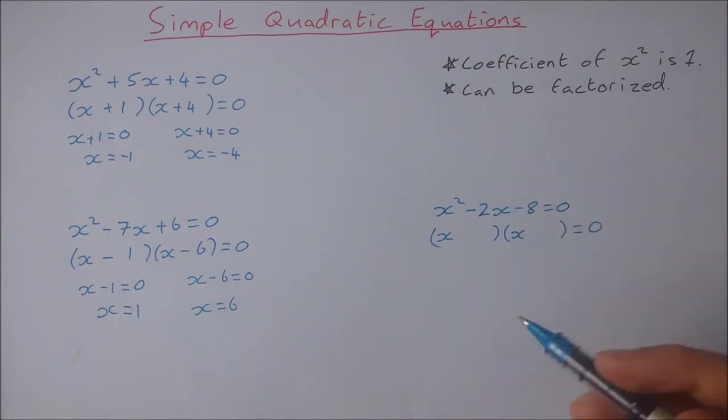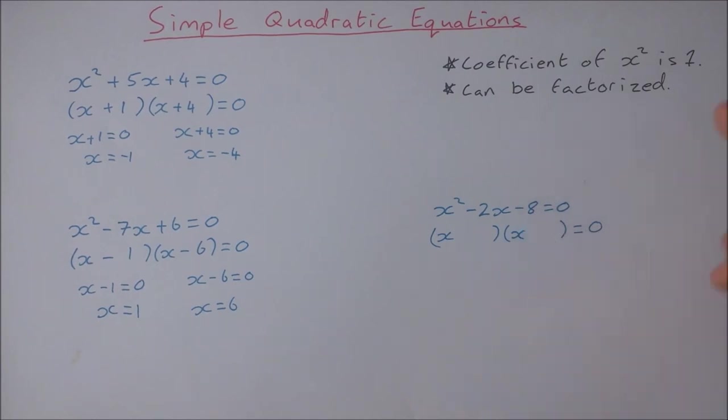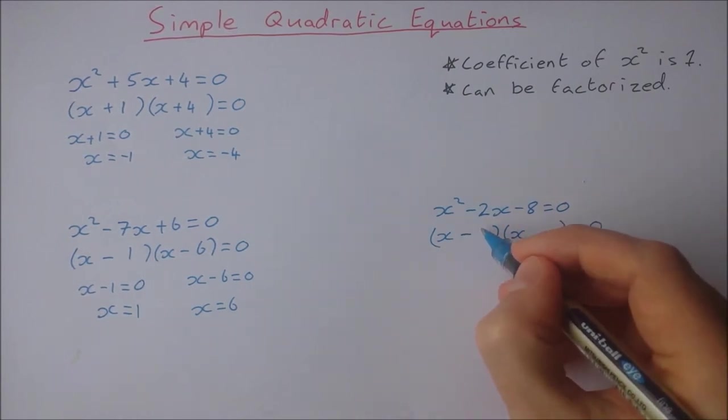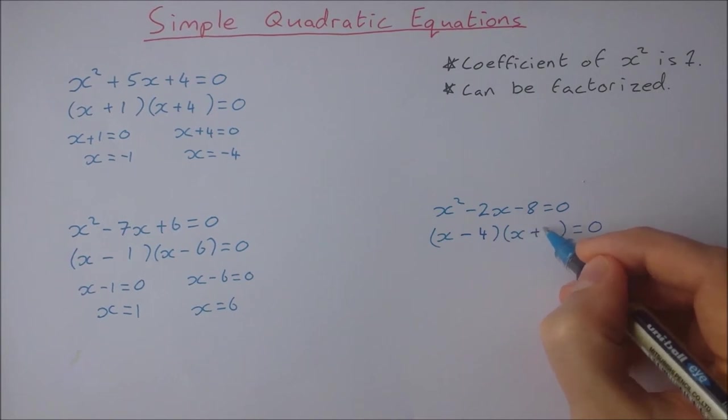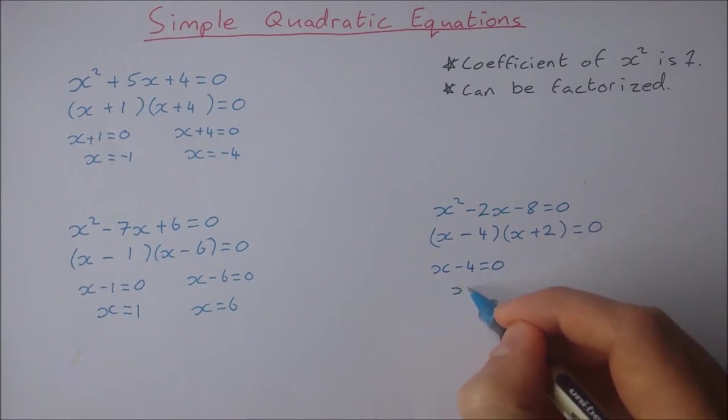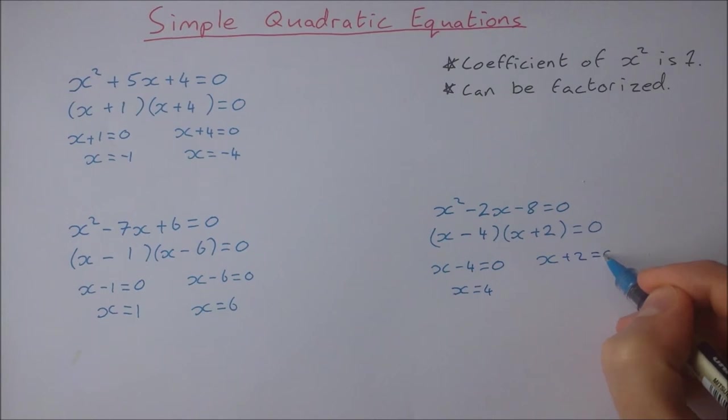Minus four by two will give me minus eight and minus four plus two give me minus two. So that's going to work: x minus four and x plus two. So then x minus four is equal to zero, so x is equal to four. And x plus two is equal to zero, so x is equal to minus two.